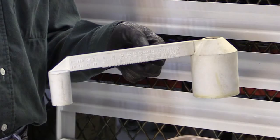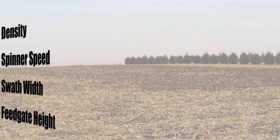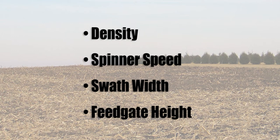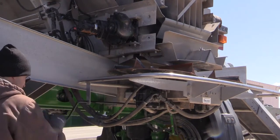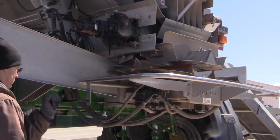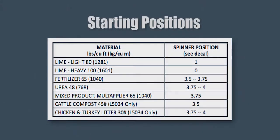Now check your product density to determine material weight. Then verify the NCAB controller has the correct product density, spinner speed, swath width, and feed gate height information. Now adjust the starting spinner assembly position. To set the spinner assembly position, simply turn the hand jack and position the assembly according to the quick reference chart supplied with the spread pattern test kit.